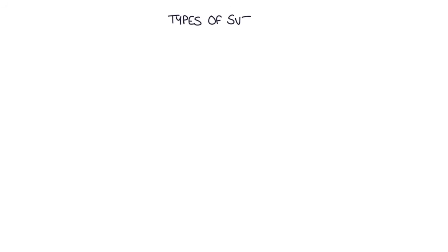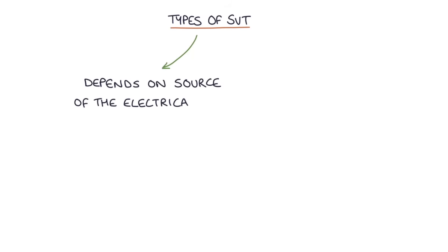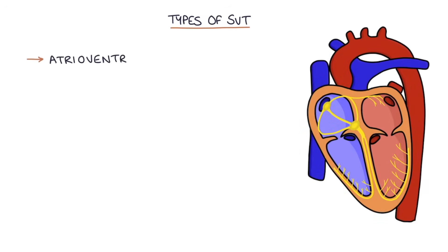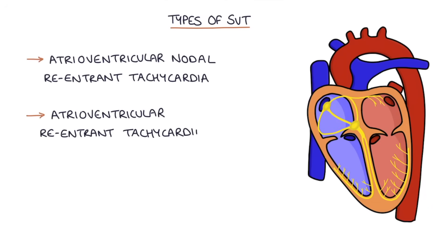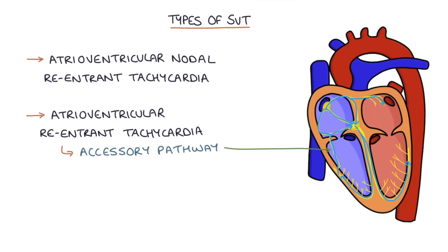There are three main types of SVT depending on the source of the electrical signal. Atrioventricular nodal re-entrant tachycardia (AVNRT) is when the re-entry point is back through the AV node — electricity passes from the atria through the AV node into the ventricles and then back through the AV node into the atria again. Atrioventricular re-entrant tachycardia (AVRT) is when the re-entry point is an accessory pathway — an additional electrical pathway between the atria and ventricles. This is the most common type of SVT.